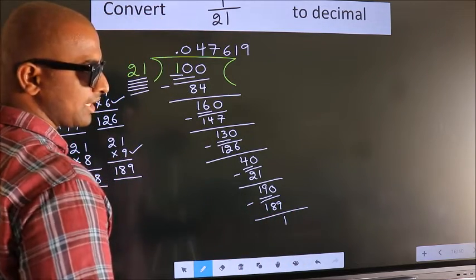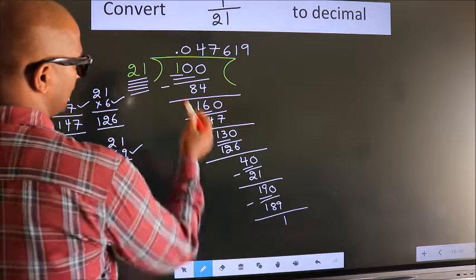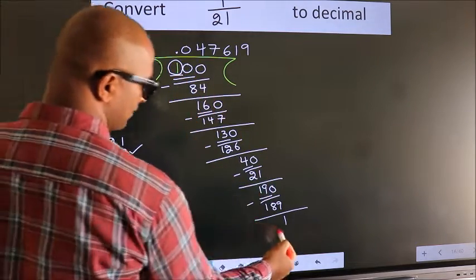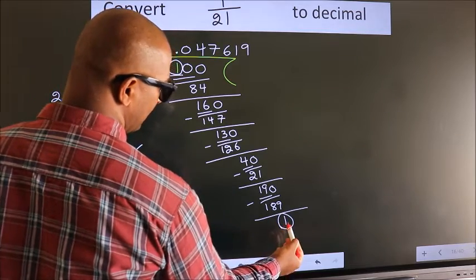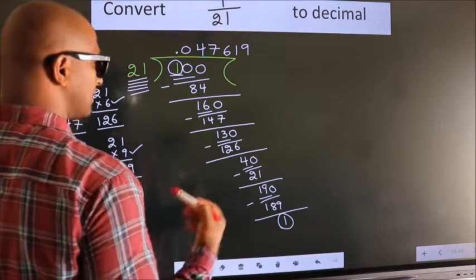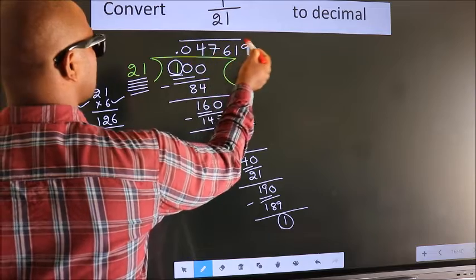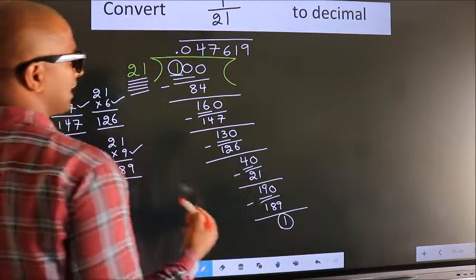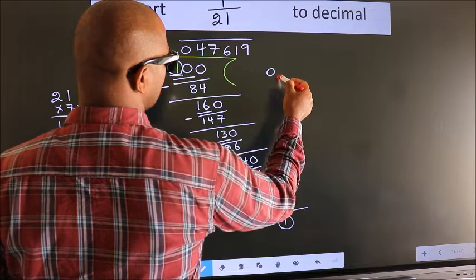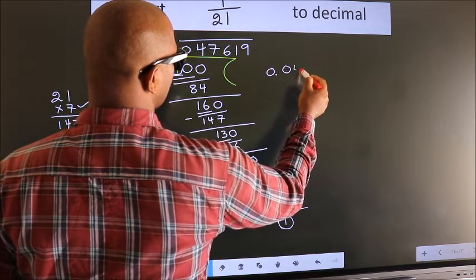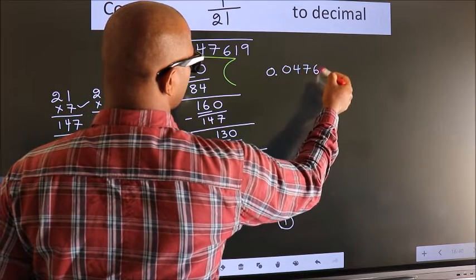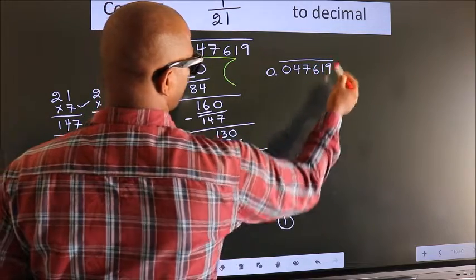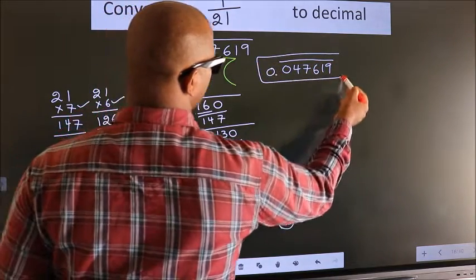Now, observe — we had 1 here at the start, and we got 1 again as the remainder. That means we get a bar on these repeating digits. Therefore, our answer is 0.047619 with a bar on these numbers. This is our answer.